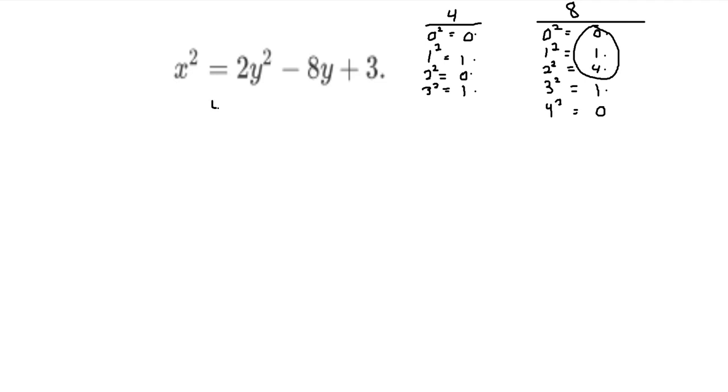And if y is, so let's say y is even. y is equal to 2 times z. If we plug that into this equation, we get that x squared is equal to 8 times z squared minus 16z plus 3.